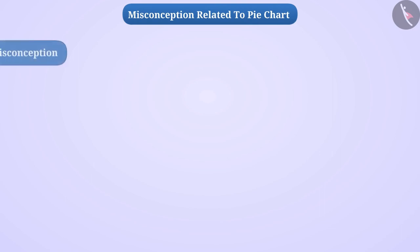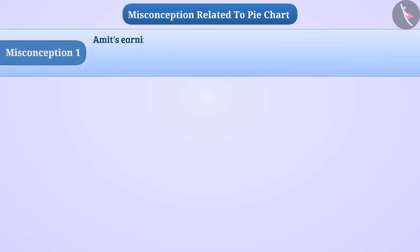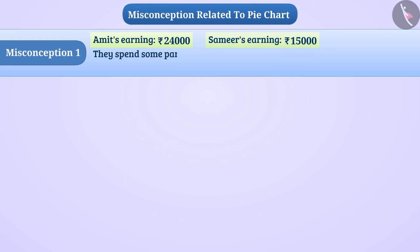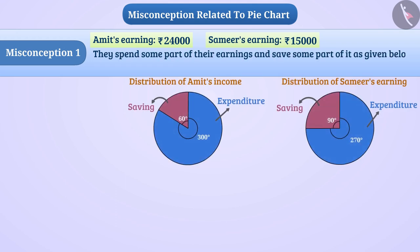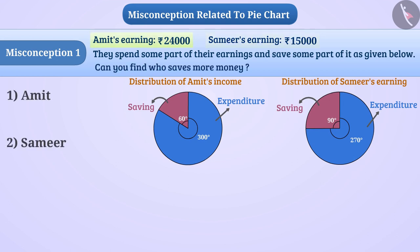Misconception one: Amit's earning is rupees 24,000 and Samir's earning is rupees 15,000. They spend some part of their earnings and save some part of it as given below. Can you find who saves more money? Stop the video and try to find it.